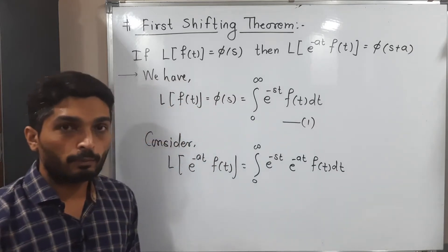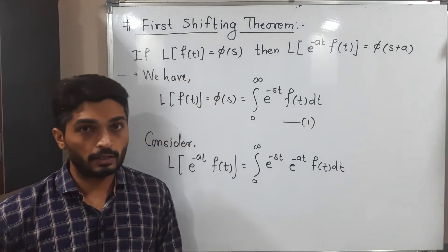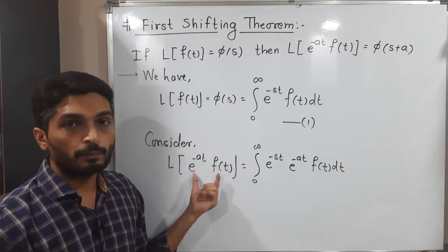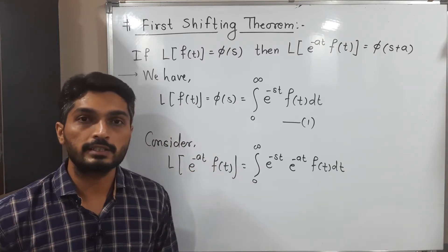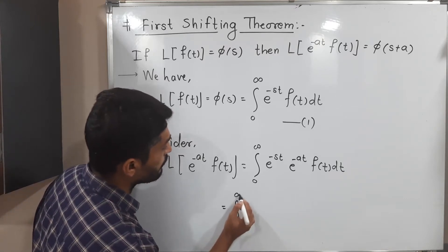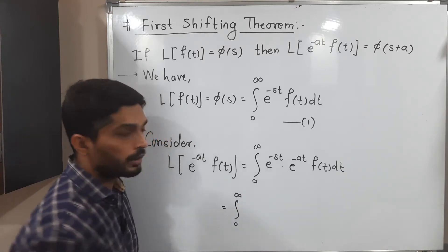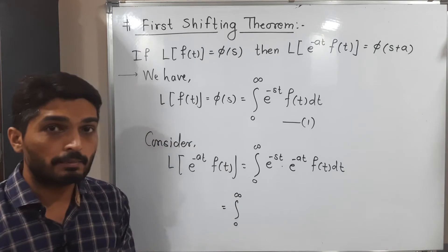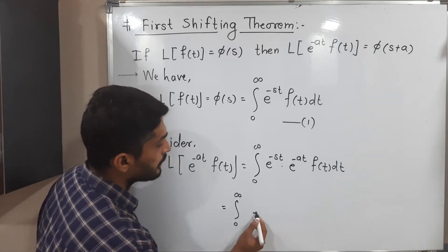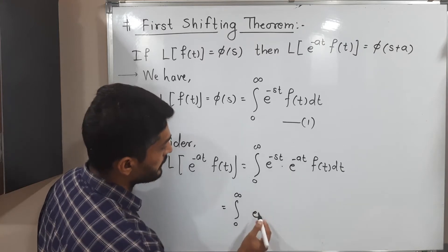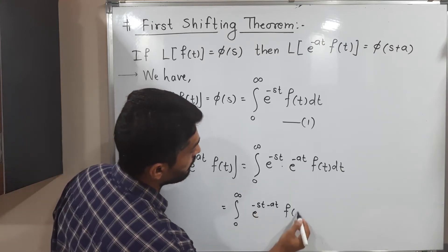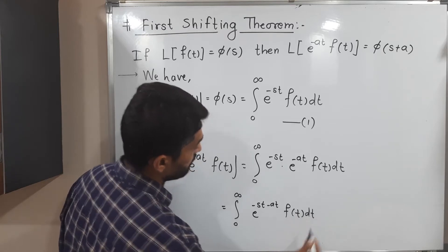So in this way, using the definition, we could write it. At the place of f(t) we write the product of those two terms. The next part: we have a product with the same base, so we can add the powers. What will happen is e raised to minus st minus at, so: integration from 0 to infinity of e raised to minus(st + at) times f(t) dt.